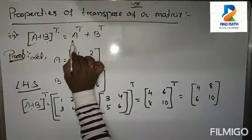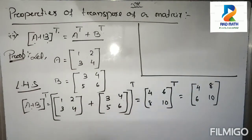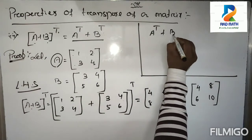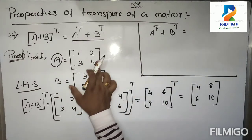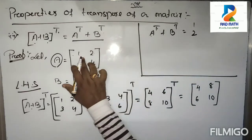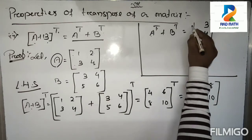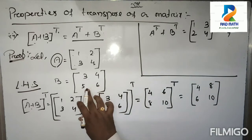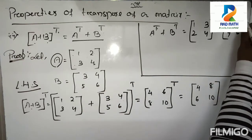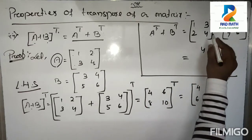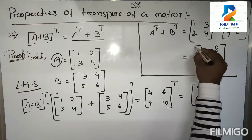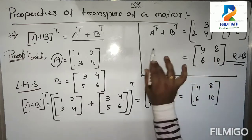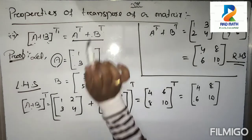Now for the RHS: A transpose plus B transpose. A transpose of 1, 2, 3, 4 gives 1, 3, 2, 4. B transpose of 3, 4, 5, 6 gives 3, 5, 4, 6. Adding these: 1+3=4, 3+5=8, 2+4=6, 4+6=10. RHS is also 4, 8, 6, 10. LHS equals RHS, so A plus B whole transpose equals A transpose plus B transpose. Proved.